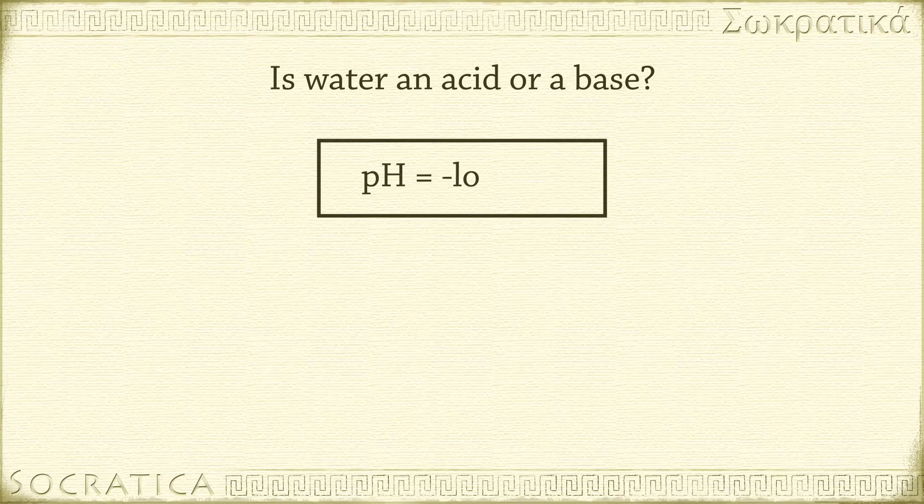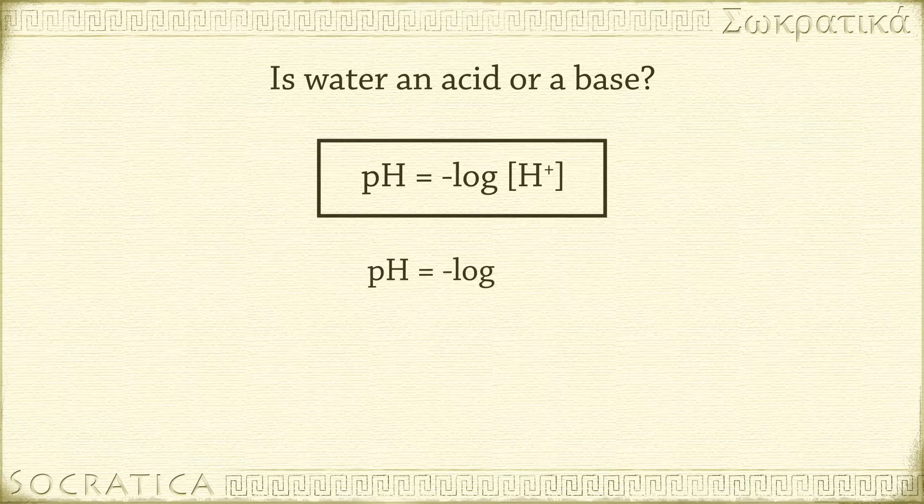If you plug that into the equation for pH, you find that water has a pH of 7. pH equals negative log of 1.0 times 10 to the negative 7. That equals negative 1 times negative 7, which equals 7.